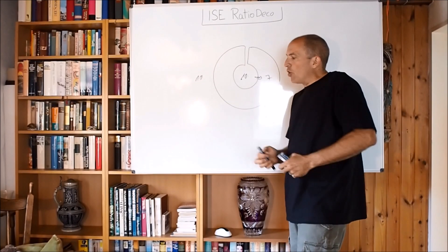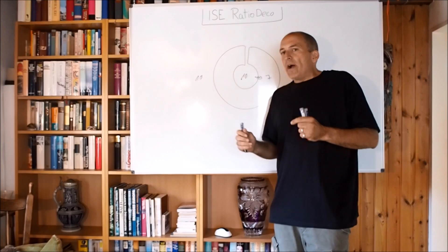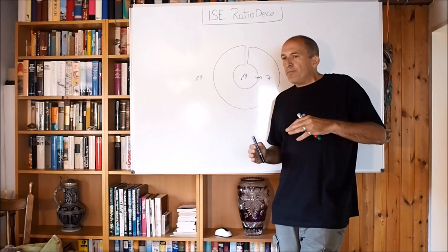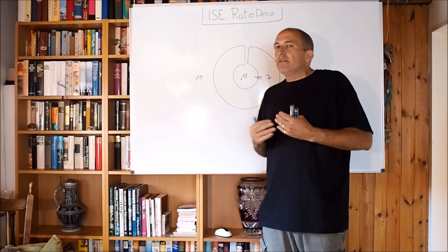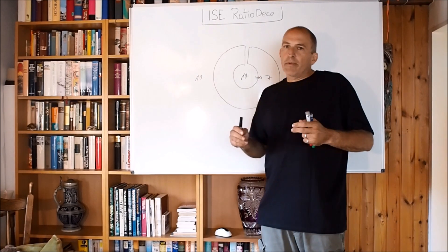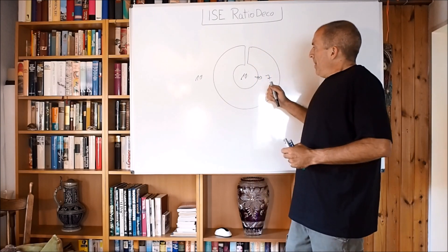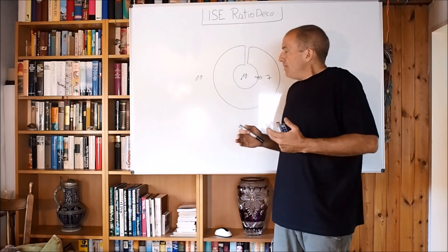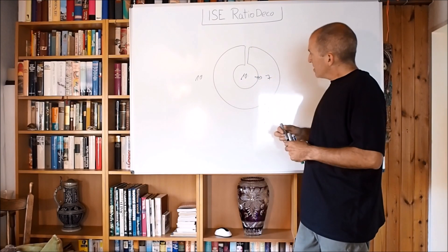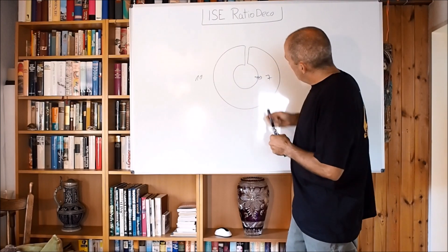So now we already have the explanation why the ascent rate in the first portion of our ascent can be relatively fast. So don't get me wrong, we don't want you to rocket off the bottom. But obviously it doesn't make a huge issue if you're a little bit faster, because unless you go below 10, below 7 here, below 7 bars, nothing will happen.